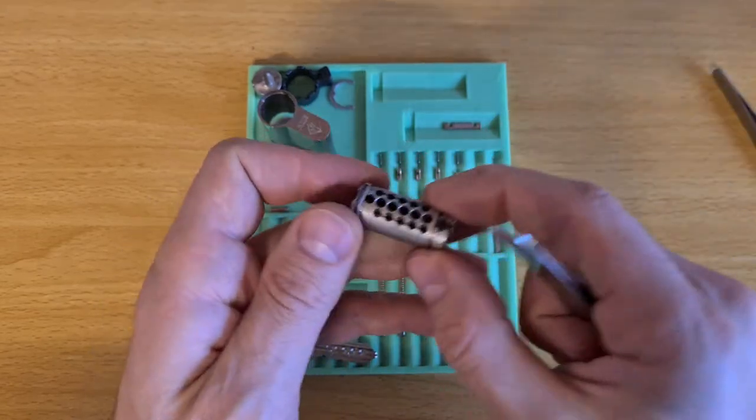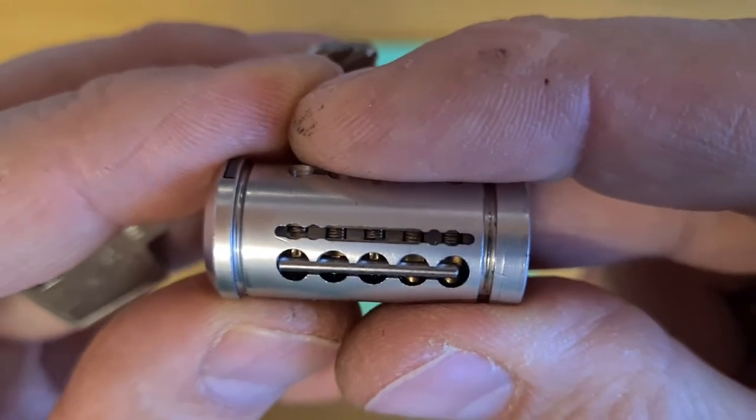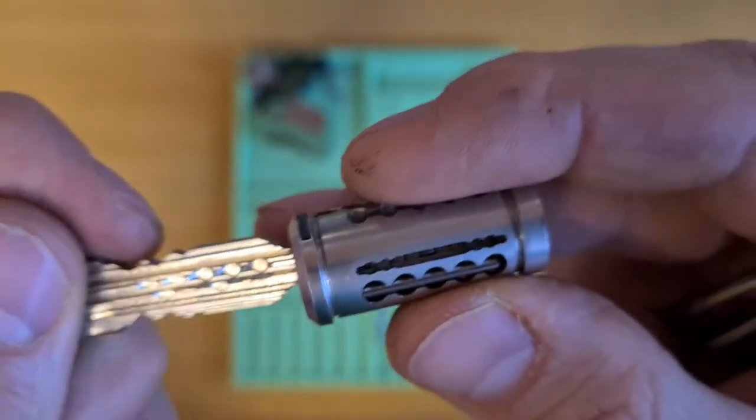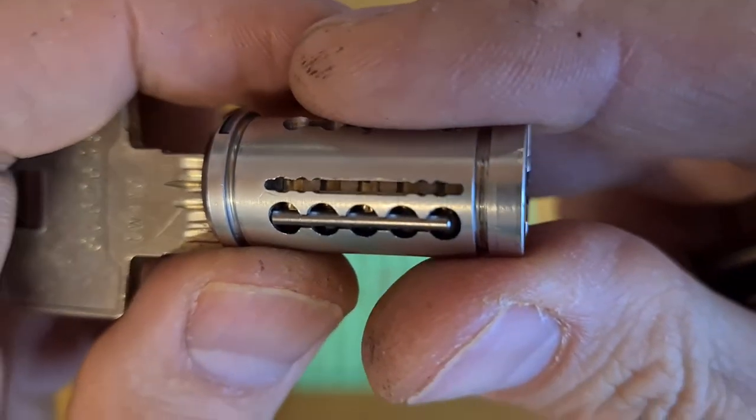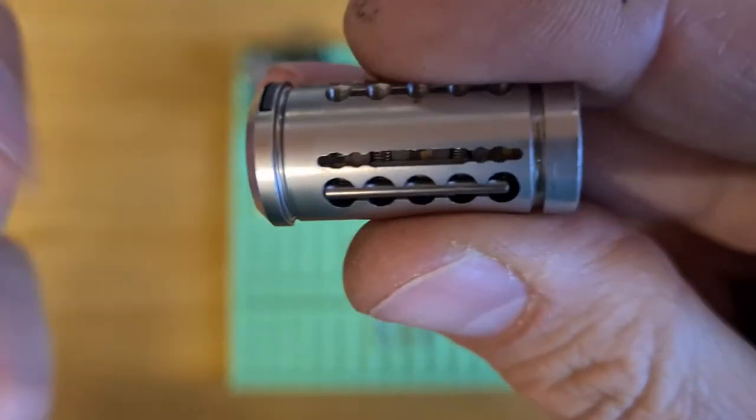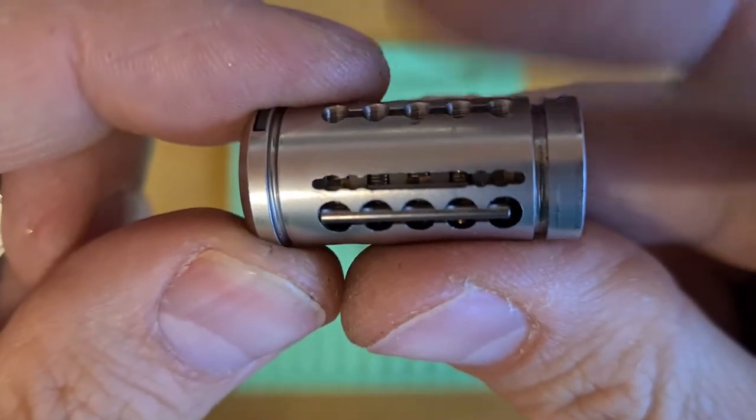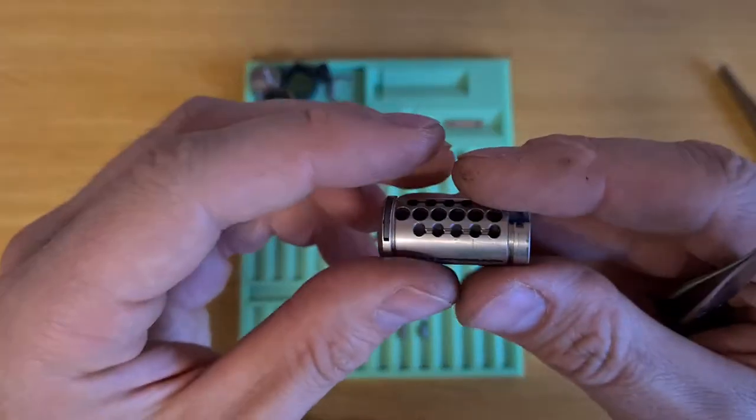One row of sliders. Let me check and show you again - now you see all those serrations, and when the key is inserted, now you see the gates. There will be springs on top that push the sliders.